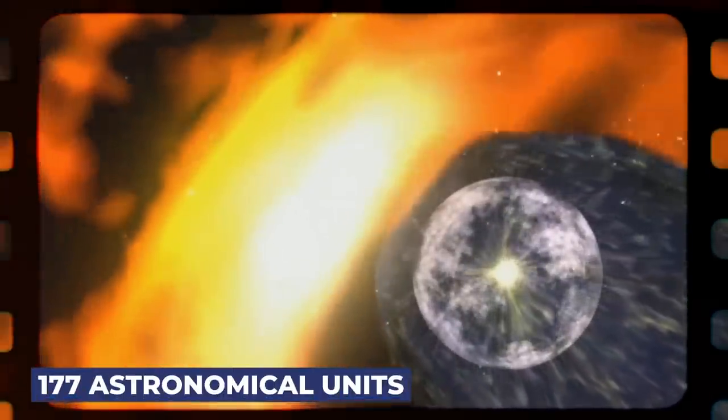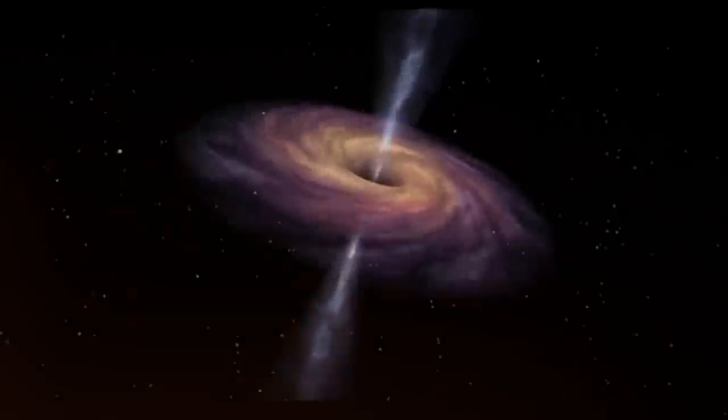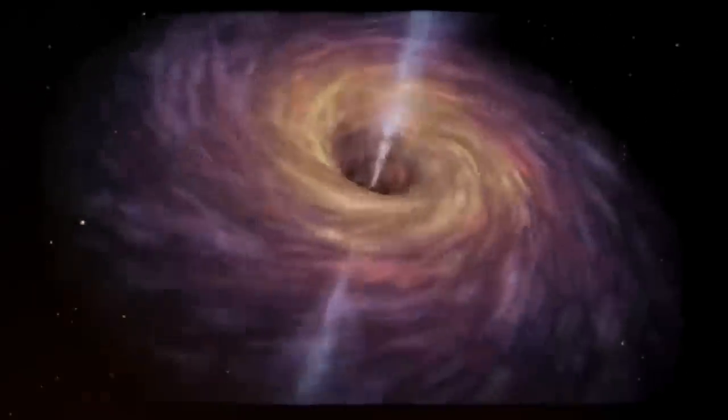The distance between the Sun and the heliopause has been measured to be about 177 astronomical units. This has provided some insight into our solar system's outer boundaries.